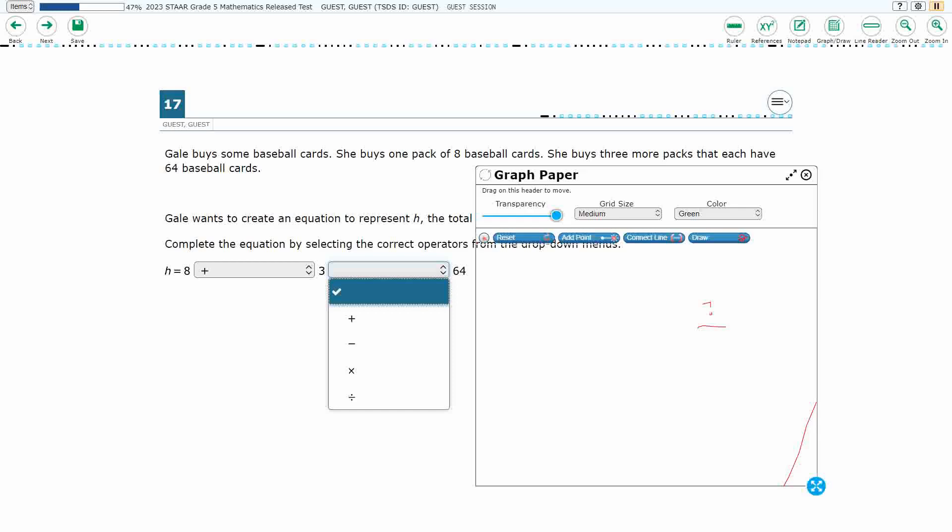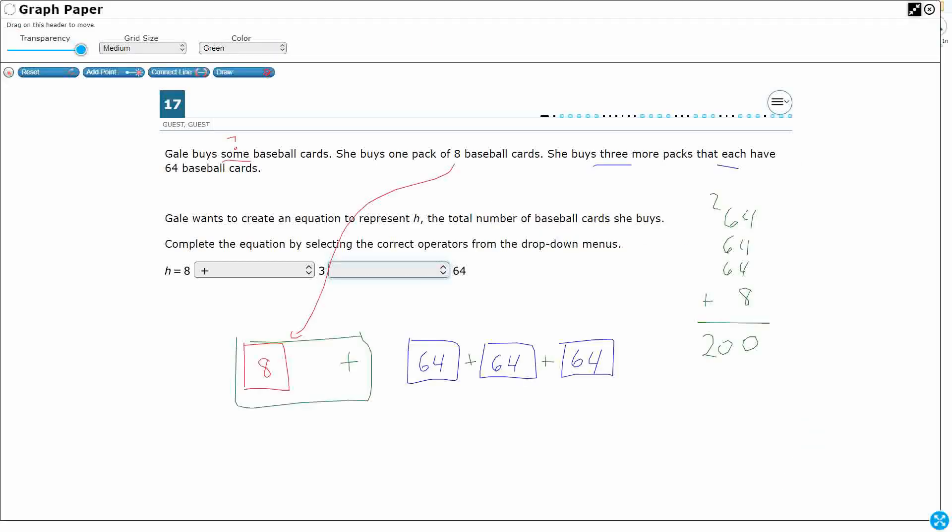Because look, I can't do 64 three different times, right? So I get eight plus three. This is what I want to do, because this is my drawing. Three, eight plus three, plus 64, plus 64, plus 64, right? That's exactly what I just did. If I can do that, we're good.